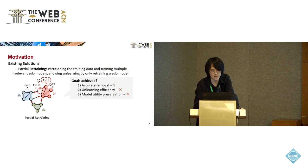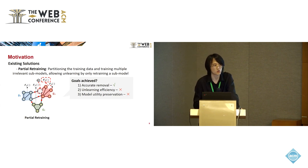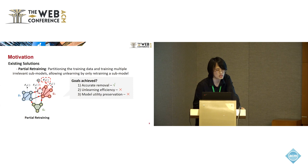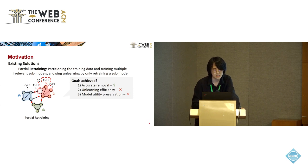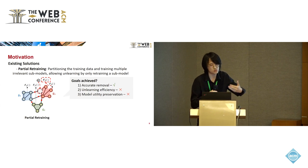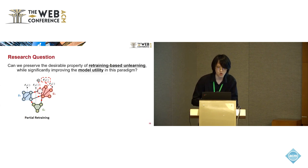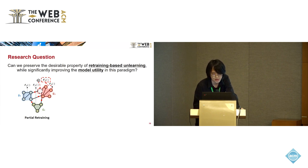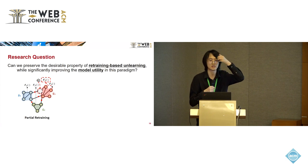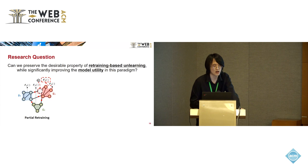Because partial retraining is based on retraining, it should have the same guarantee as retraining from scratch. So it clearly achieves accurate removal. However, recent empirical results have found that the unlearning efficiency and model utility of partial retraining methods are not desirable. The model utility degradation is clear: when you partition the graph into multiple sub-graphs, structural and semantic information in graphs is dropped, causing performance drops in machine learning models. So our research revolves around the main research question: can we preserve the desirable properties of retraining-based unlearning while significantly improving model utility, thus achieving all three unlearning goals?